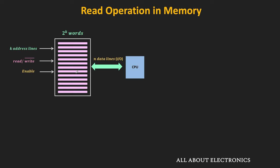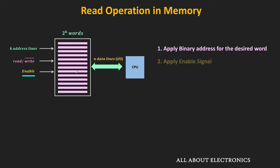To perform the read operation, first the address corresponding to the specific word from which we want to read the data is applied to the memory. Once the address line gets stable, the enable signal is applied to enable the memory, and then the read signal is applied.